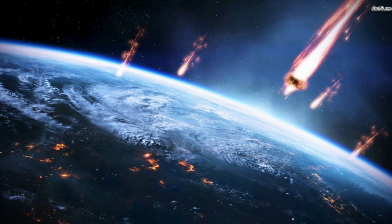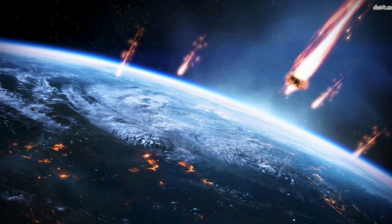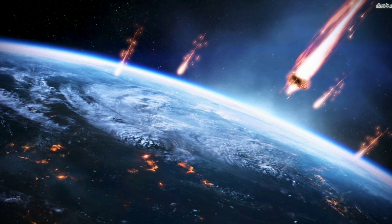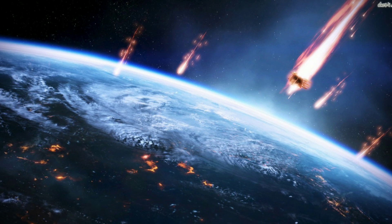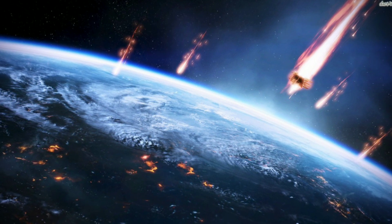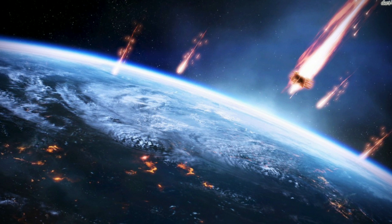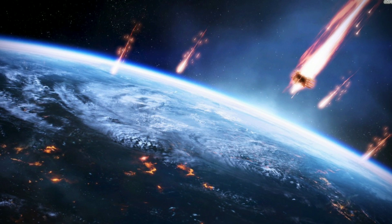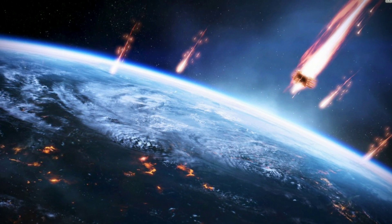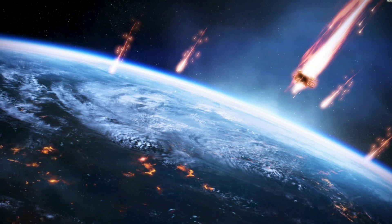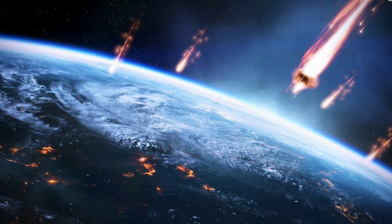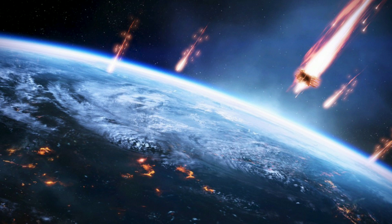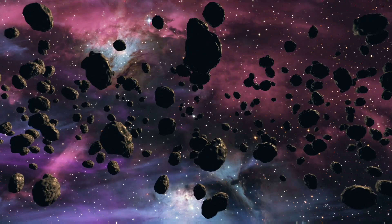While asteroid 216258 2006 WH1, which was discovered in 2006, will truly be passing by Earth around Christmas, CNEOS reports that the asteroid is expected to safely pass by Earth at a distance of about 15.19 LD (lunar distance), approximately 3.6 million miles. According to Dr. Paul W. Chodas, the director of the Center for Near-Earth Object Studies, there is nothing unusual or dangerous about asteroid 216258 2006 WH1.